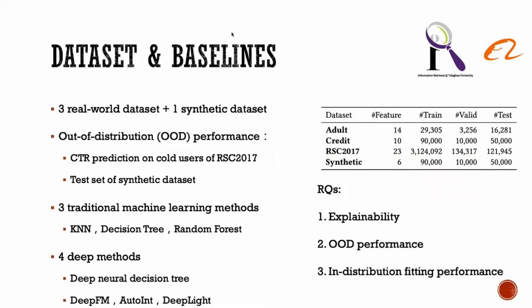We conduct experiments on three public real-world datasets, including Adult, Credit, and RecSys Challenge 2017, and one synthetic dataset. Click-through rate prediction on cold users of RecSys Challenge 2017 and test set of synthetic dataset are used to evaluate out-of-distribution performance. We compare the proposed ENRL with three widely used traditional machine learning methods and four state-of-the-art deep neural models. We conduct experiments to understand the explainability, out-of-distribution performance, and in-distribution performance of ENRL.